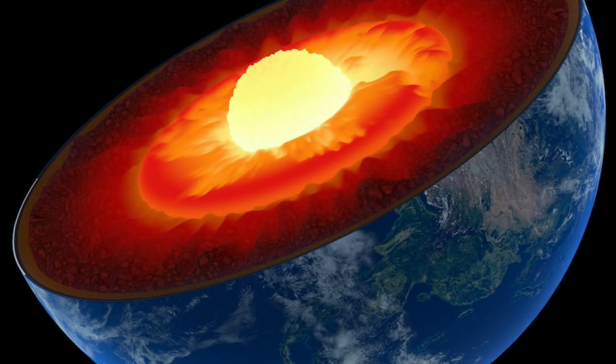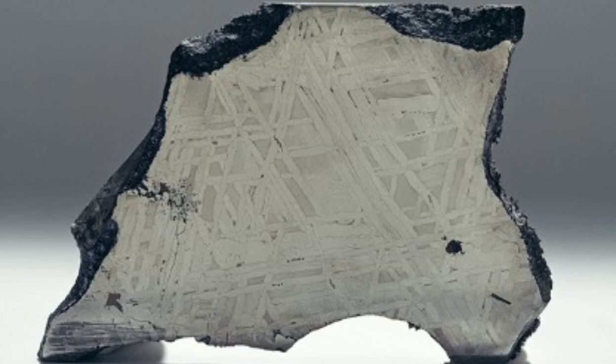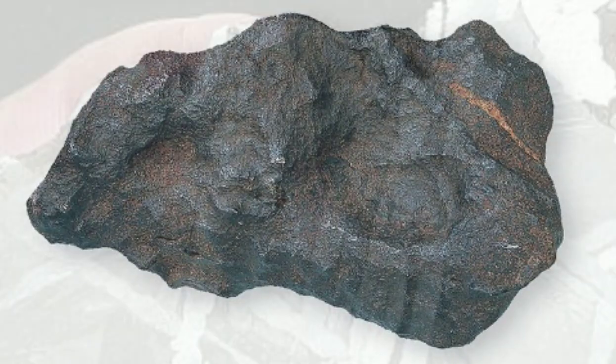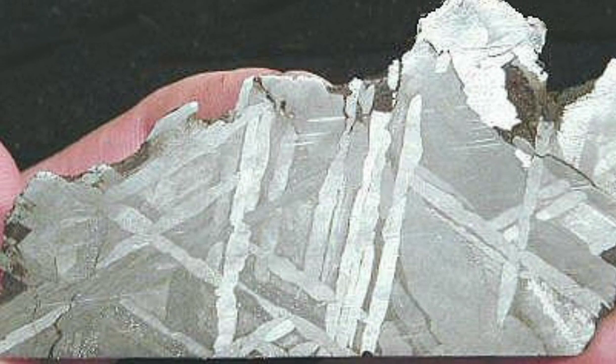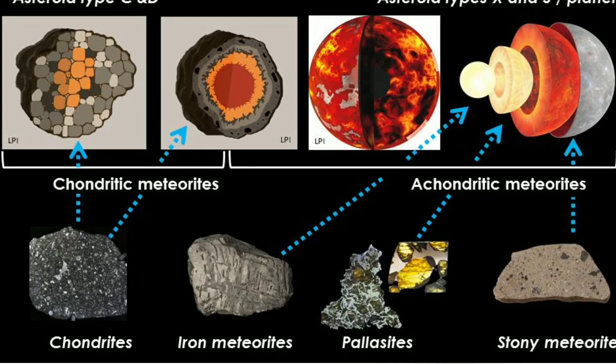An iron meteorite cut and etched with acid reveals its crystal structure. Iron meteorites are mainly made of an iron-nickel alloy with a distinctive crystalline structure known as a Widmanstätten texture. Bands are formed by varying levels of nickel. There can be wide variation in the texture and mix of minerals present within iron meteorites, which produces many groups and subtypes.